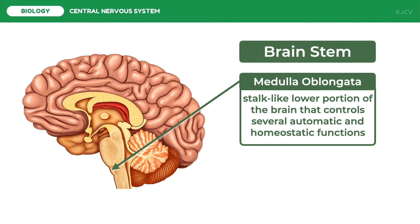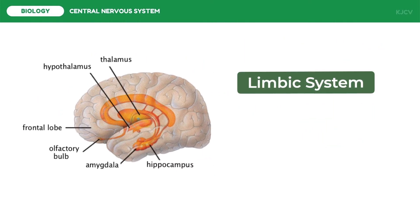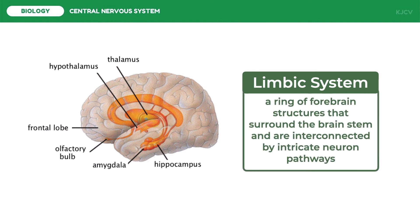In addition to the four major parts of the brain, there is one system that specializes in emotions and learning — the limbic system. The limbic system is not a separate structure but a ring of four brain structures that surround the brain stem, interconnected by intricate neuron pathways. This complex interacting network is associated with emotions, basic survival and social-sexual behavior patterns, motivation, and learning.